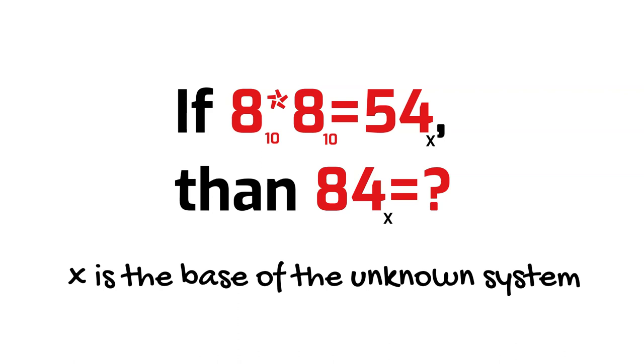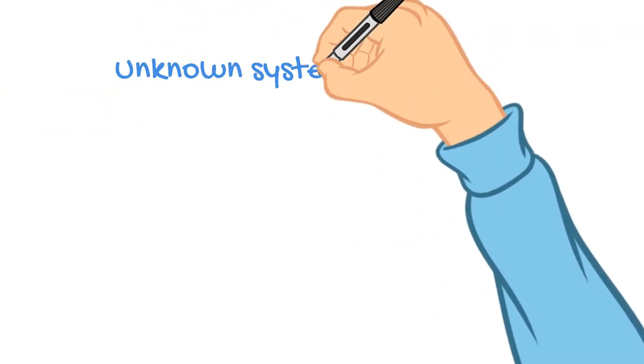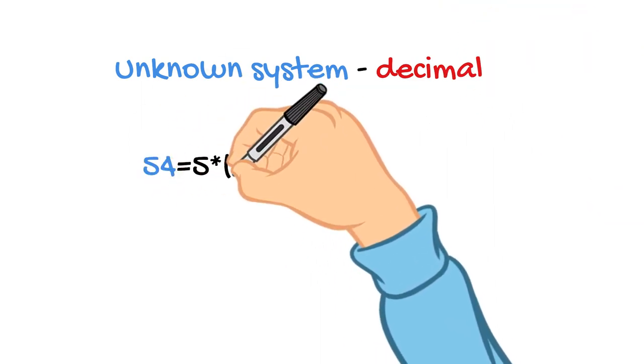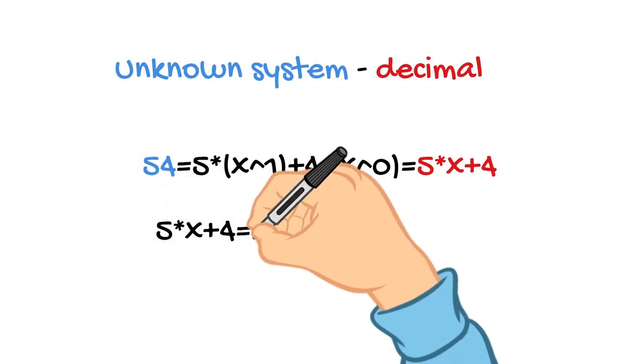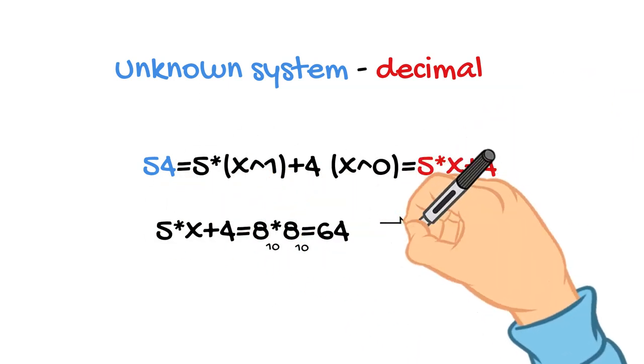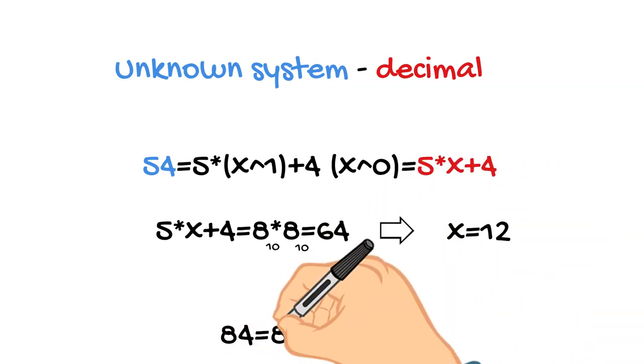In order to do this we can write the general equation converting 54 from the unknown system to decimal. Because we are provided with the result in the decimal system, we can solve this linear equation and find that the basis of this unknown system is 12. Therefore, 84 in this 12-based numeral system is equal to 100 in the decimal numeral system.